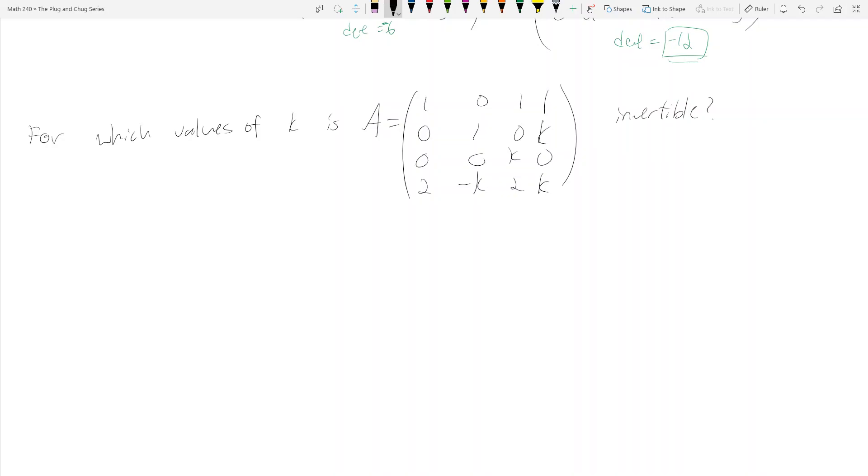So here's this matrix A and we need to find the K such that matrix A is invertible. What does the determinant have to do with invertibility? Well, A is invertible if and only if the determinant of A is not equal to zero.